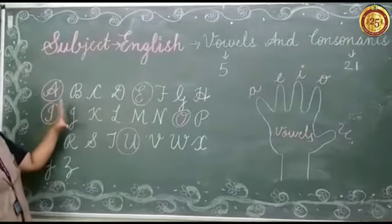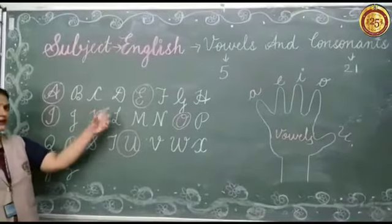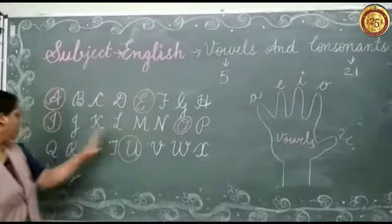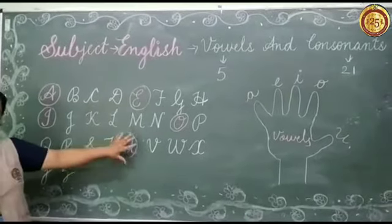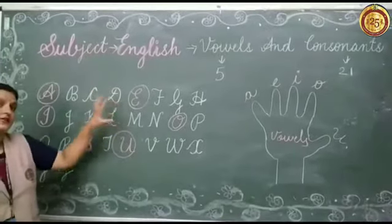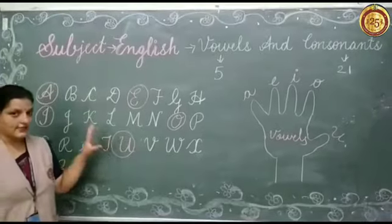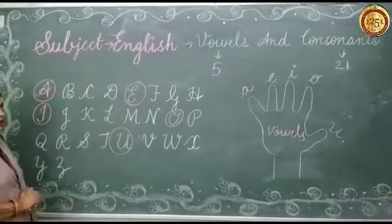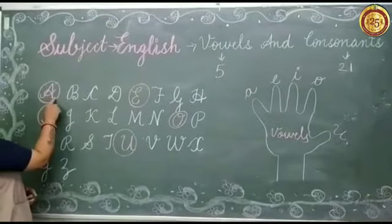Now, can you see pink color on the board? A, E, I, O, U. Do you know how many alphabets are there? Yes, there are 26 alphabets and one more thing. Count with me.